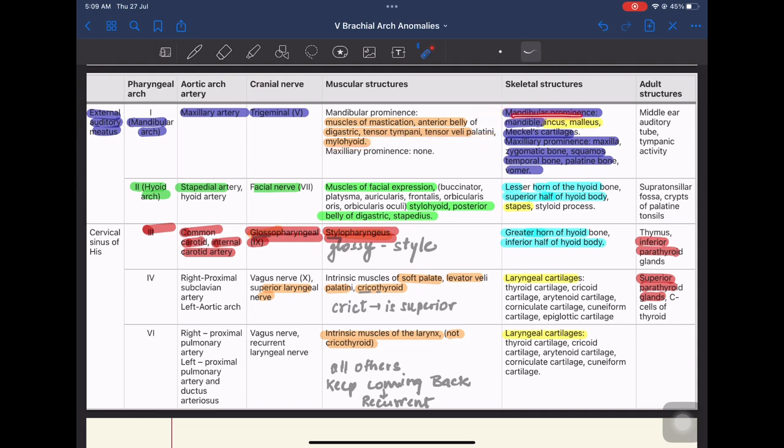The skeletal structures derived are the mandibular prominence, the mandible, malleus incus, Meckel's cartilage, maxillary prominence, maxilla, zygomatic bones, squamous temporal bone, palatine bone and the vomer bone. The adult structures derived from the first arch are the middle ear, auditory tube and the tympanic cavity.